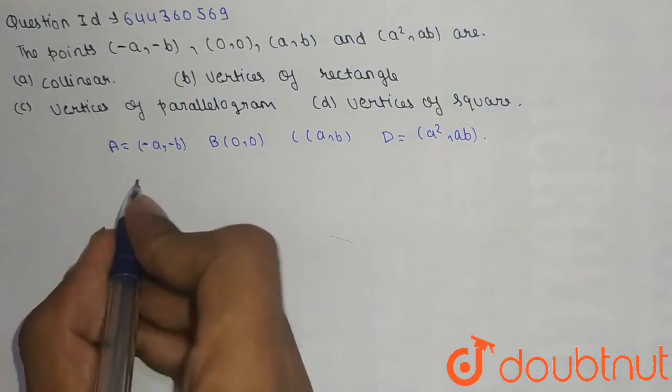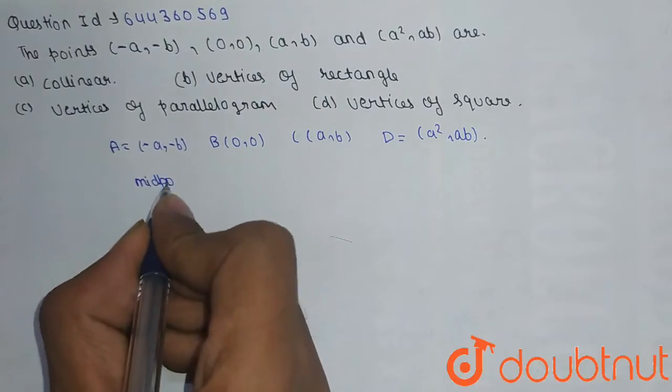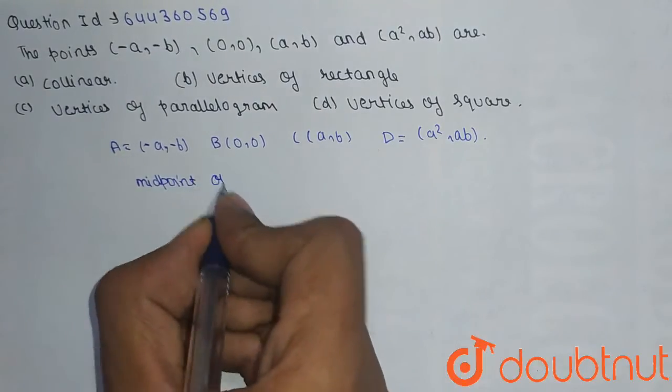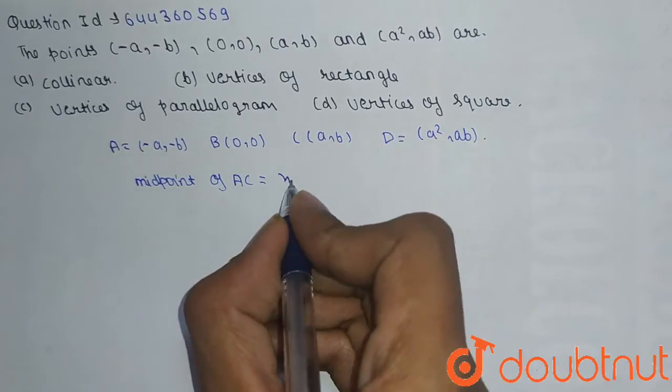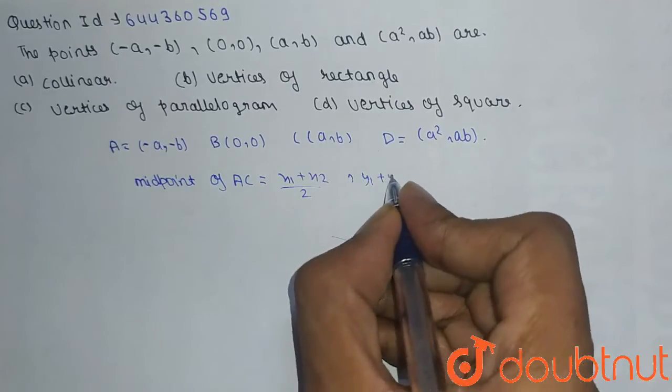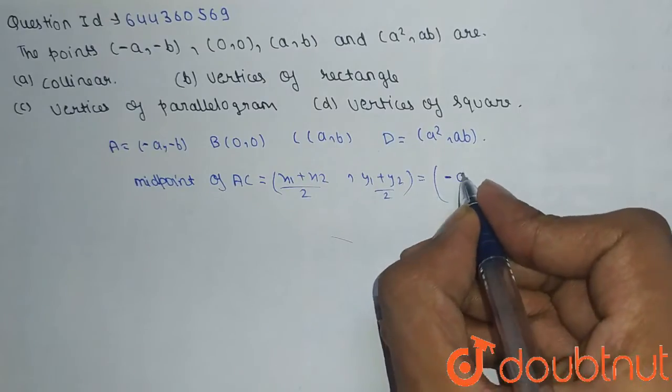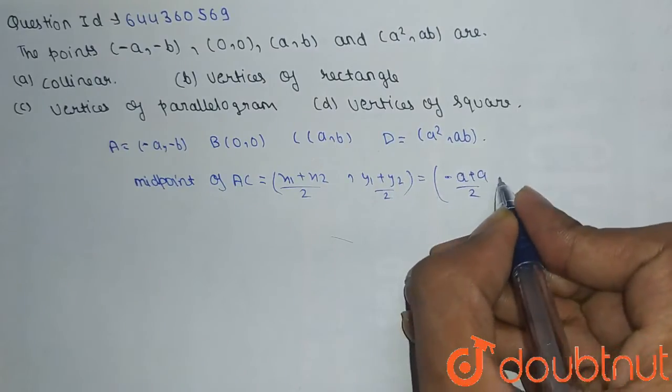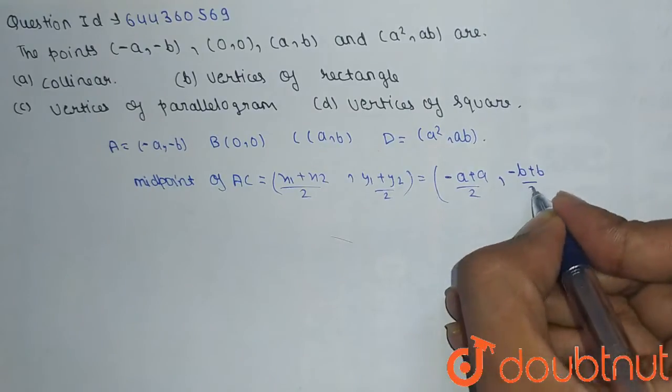So firstly what we have to do, we have to find midpoint of AC. So midpoint of AC is equal to (x₁ + x₂)/2, (y₁ + y₂)/2. So this will be equal to (-a + a)/2, (-b + b)/2.